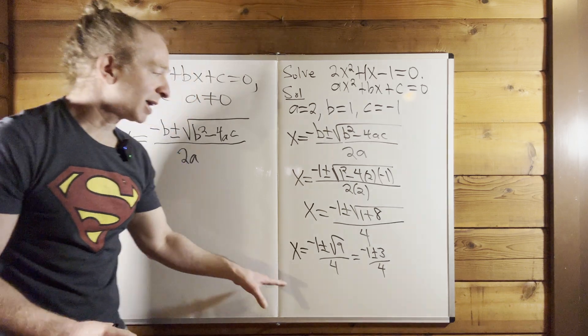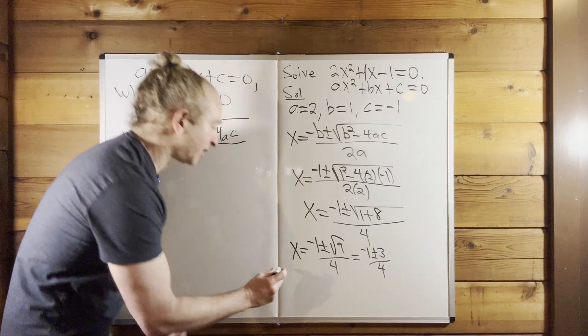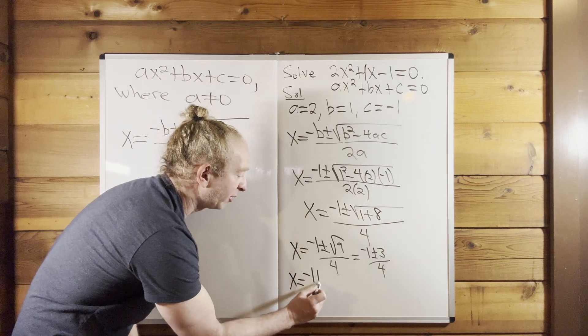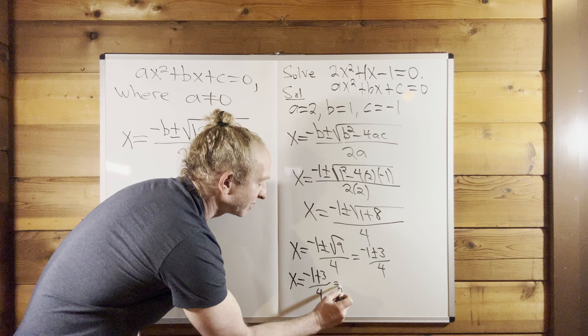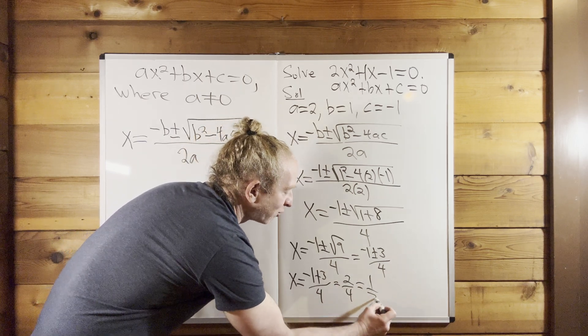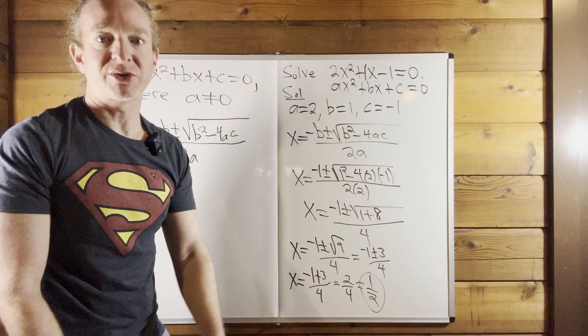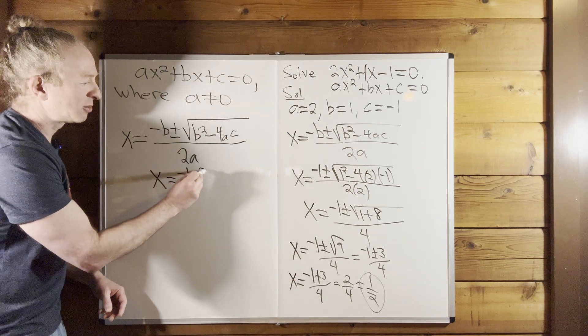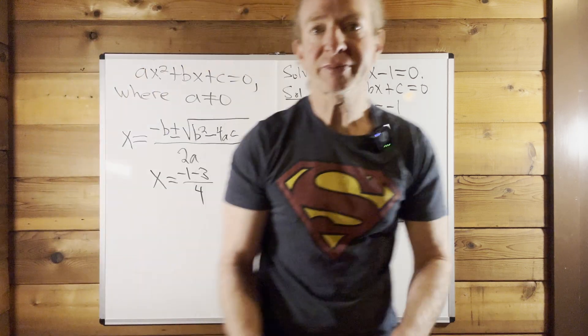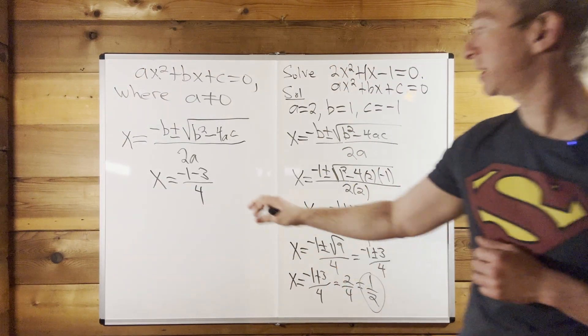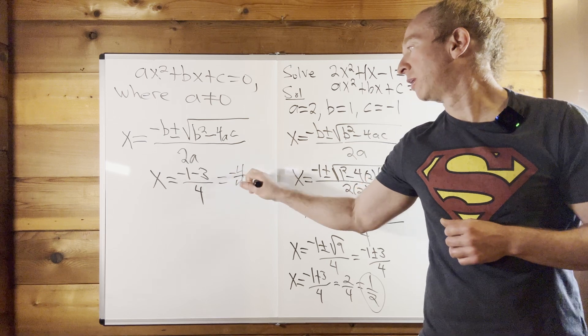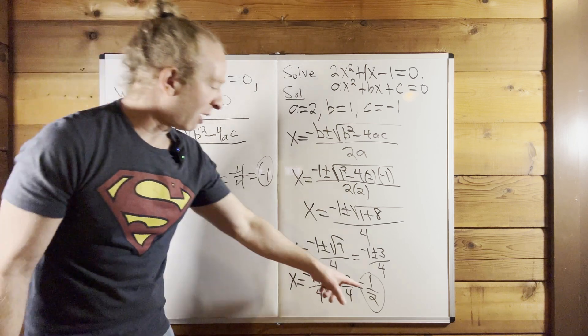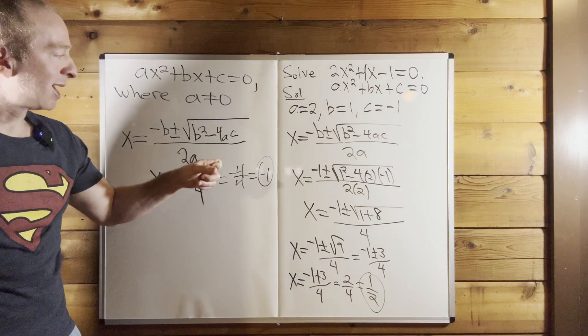So how do we keep going here? So what you do now is you break it up into two separate cases, okay? So the first case would be x equals, let's do the plus case first. So it'll be negative 1 plus 3 over 4. That's going to be 2 over 4, which is 1 over 2. That's one of our answers, 1 half. Now we'll do the minus case. I'll do it over here because I'm running out of room. So x equals minus 1 minus 3 over 4. That would be the minus case. This is minus 4 over 4, which is minus 1. So those are the answers to this quadratic equation. We've got 1 half and we've got minus 1.